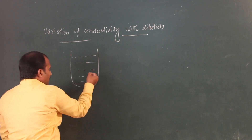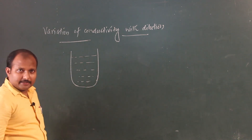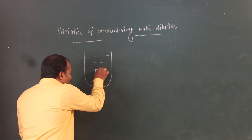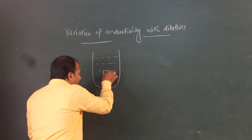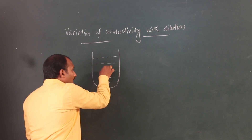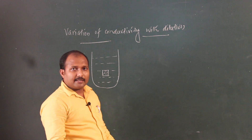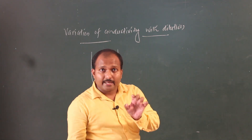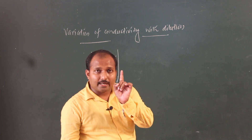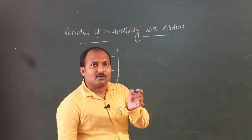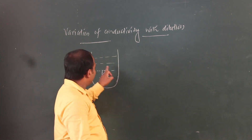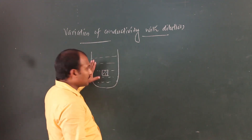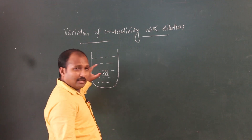Consider a solution of potassium chloride. We're looking at the conductivity of ions present in one centimeter cube of this solution — the ions present in one centimeter cube consistently.